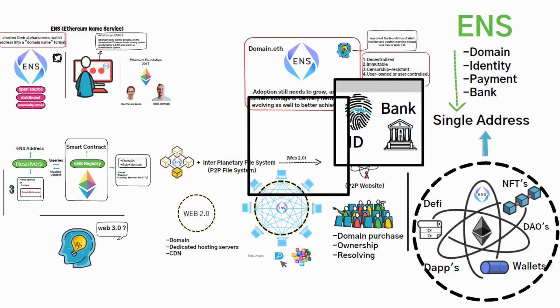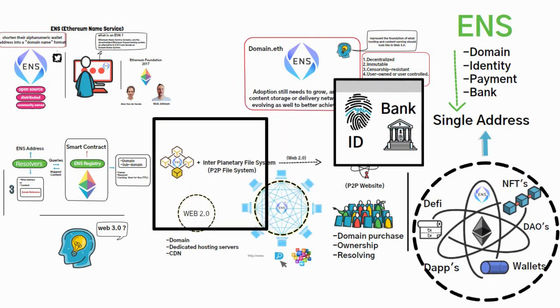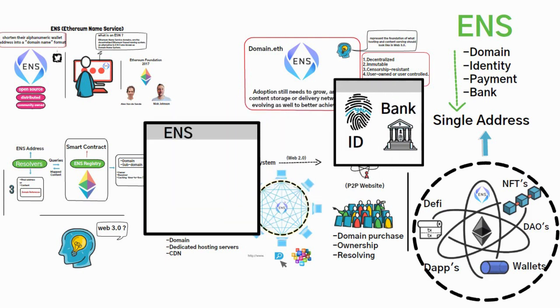Furthermore, ENS has a native token called the ENS token that governs the Ethereum Name Service. The ENS token will be used to propose and vote for changes to the protocol.